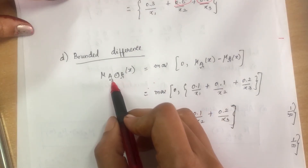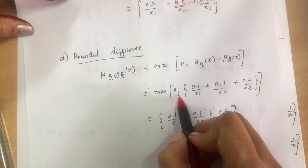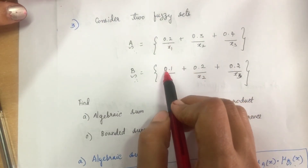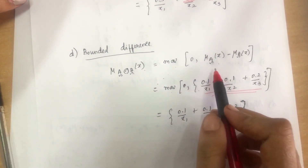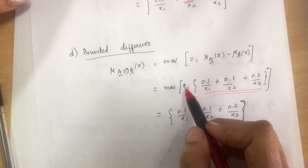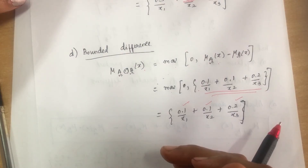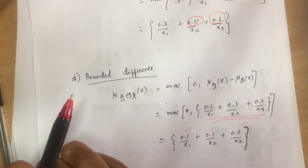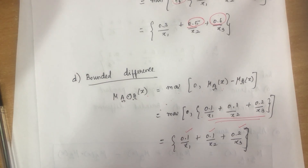Bounded difference formula: μ(A⊖B)(x) = max(0, μA(x) − μB(x)). Subtracting: 0.2−0.1=0.1, 0.3−0.2=0.1, 0.4−0.2=0.2. Comparing with 0: max(0,0.1)=0.1, max(0,0.1)=0.1, max(0,0.2)=0.2. Result: 0.1/X1 + 0.1/X2 + 0.2/X3. In this video, all problems in fuzzy sets have been explained. Thank you for watching.